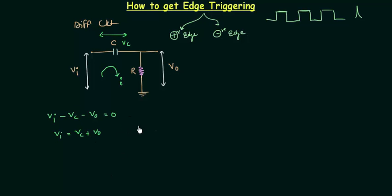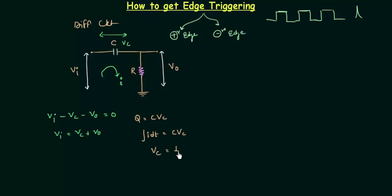VC can be calculated from Q = C·VC, where Q is charge and C is capacitance. Q can be written as the integration of I·dt, so VC = (1/C)∫I·dt. Replacing VC with this value and applying Ohm's law (VO = IR), we can express V output in terms of I.